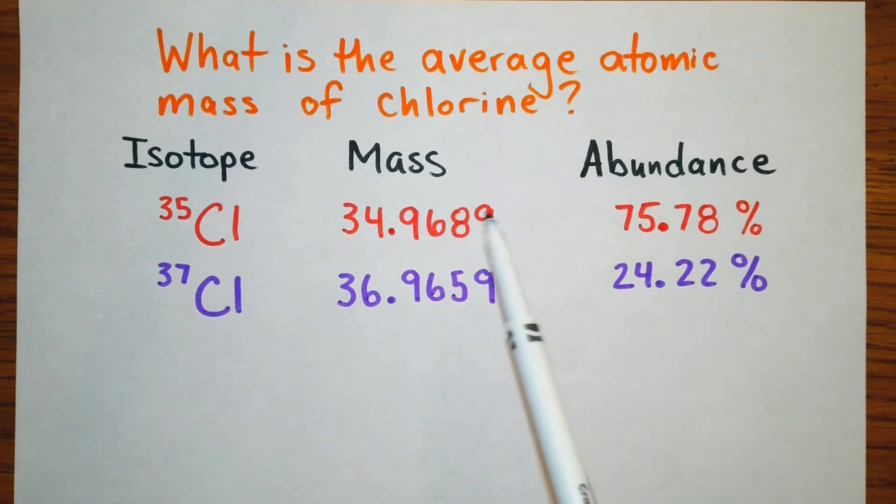You are going to multiply the mass and the decimal form of the abundance for each isotope and then you're going to add those numbers together. So it's going to look like this.